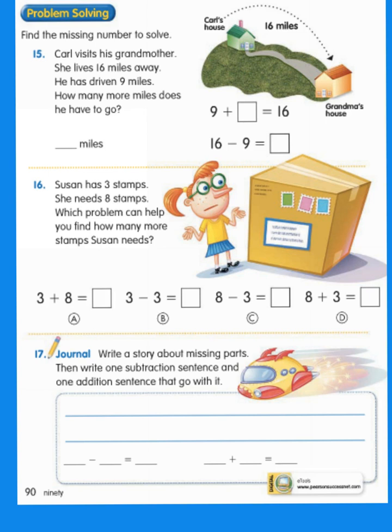All right. We're back. Find the missing number to solve. Number 15. Carl visits his grandmother. She lives 16 miles away. He has driven 9 miles. How many more miles does he have to go? So, again, catch 9 and count up to 16. That'll give you your answer here, here, and here. Number 16. Susan has 3 stamps. She needs 8 stamps. Which problem can help you find how many more stamps Susan needs? Okay, you need that 8 and that 3. If she's already at 3 and she needs 8, how are you going to get to the next number? Number 17. Guess what?